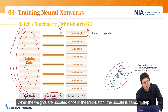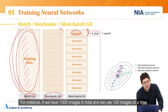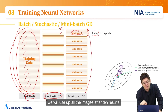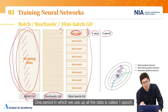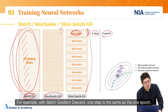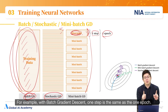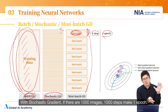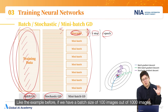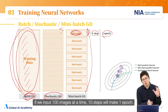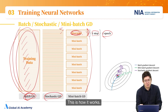When the weights are updated once in the mini-batch, that update is called one step. For instance, if we have 1000 images in total and use 100 images at a time, we will use up all the images after 10 steps. One period in which we use up all the data is called one epoch. With batch gradient descent, one step equals one epoch. With stochastic gradient descent, if there are 1000 images, 1000 steps make one epoch. With a batch size of 100 out of 1000 images, 10 steps make one epoch.